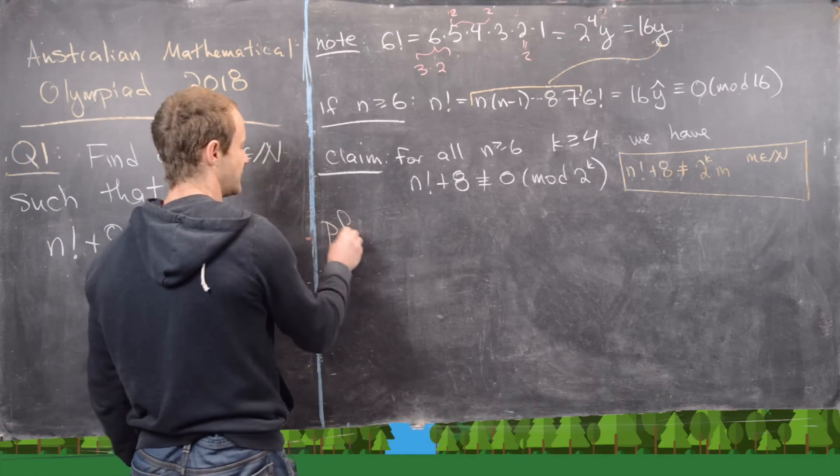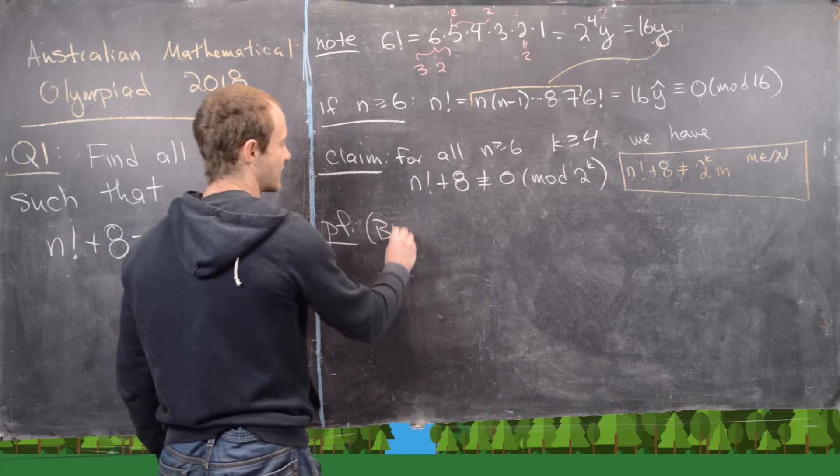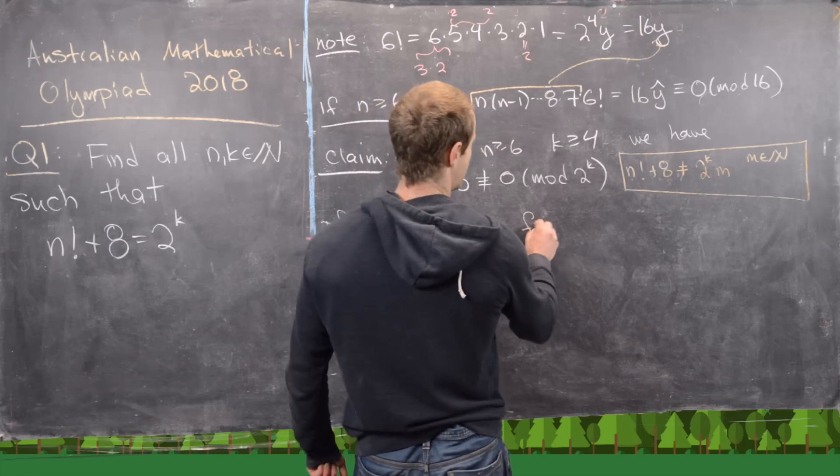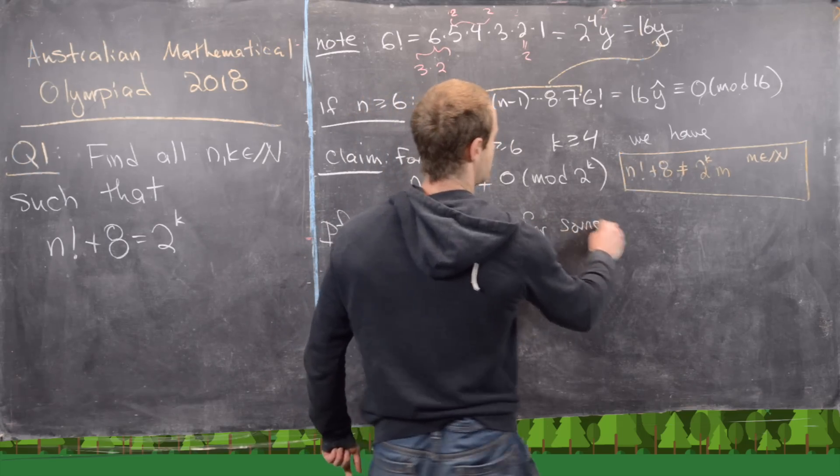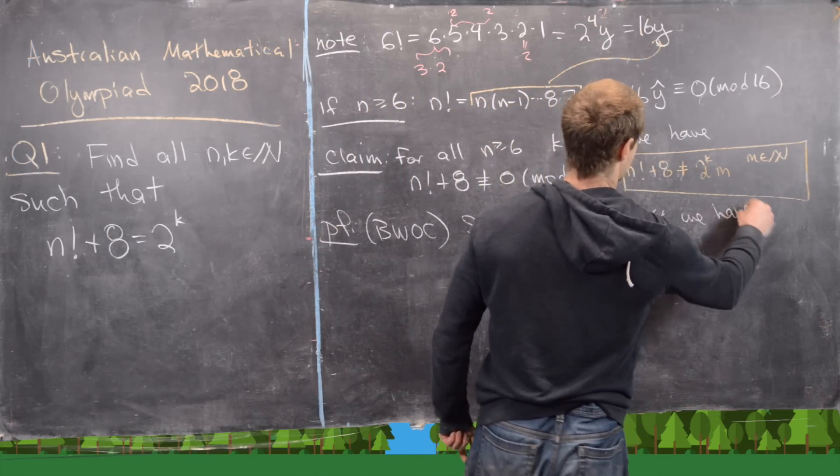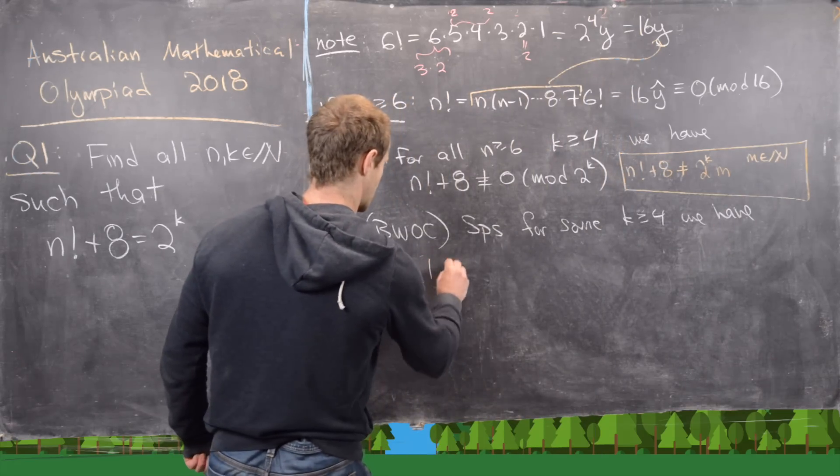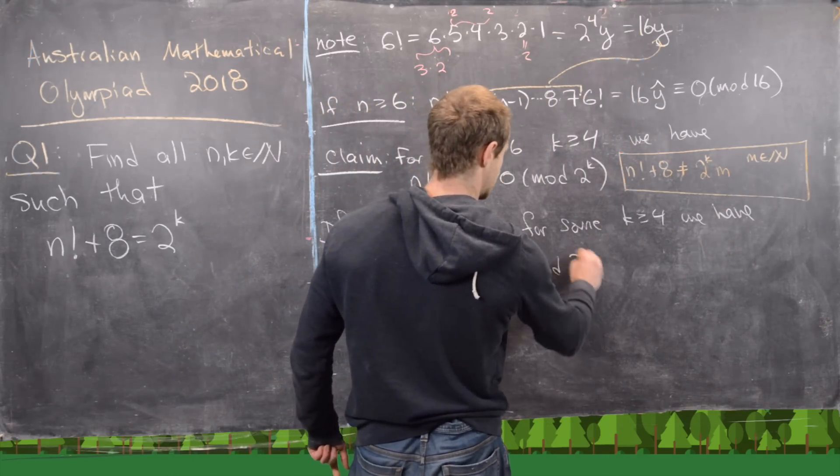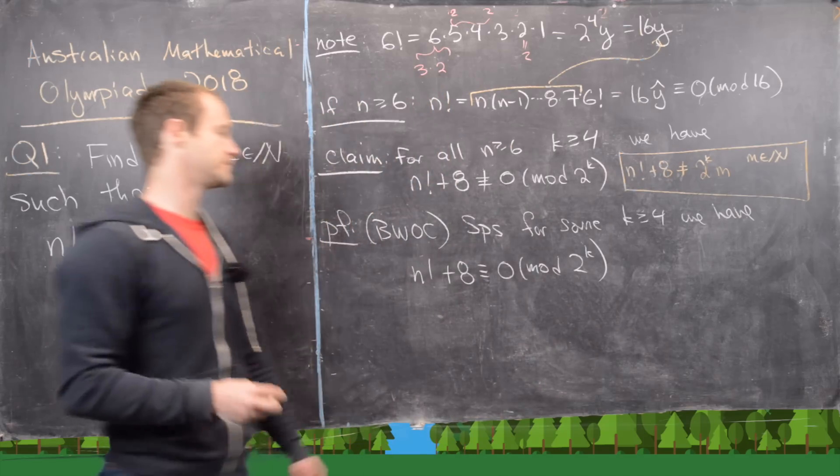So let's go ahead and do this proof by way of contradiction. Let's suppose for some k bigger than or equal to 4, we have n factorial plus 8 is congruent to 0 mod 2 to the k.